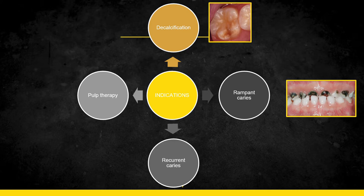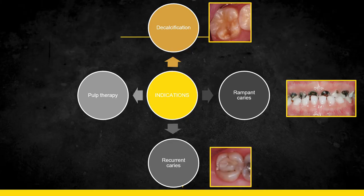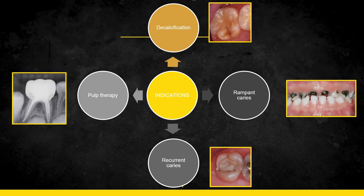Next is rampant caries, defined as a widespread, rapidly burrowing type of caries that leads to faster involvement of the pulp. Placement of a stainless steel crown helps prevent that. Then we have recurrent caries — kids categorized under high-risk caries are frequently affected, so a crown is necessary. Most definitely after pulp therapy too, because post pulp therapy the tooth becomes excessively brittle and can be damaged by masticatory forces.